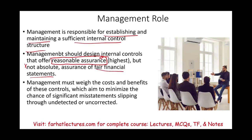Management must also weigh the cost and benefit of these controls. You can have controls as close to perfect as possible, but it's going to cost a lot of money. Management will have to evaluate whether the cost outweighs the benefit. Simply put, the whole purpose of internal control is to minimize the chances of significant misstatements slipping undetected or uncorrected through the accounting information system.